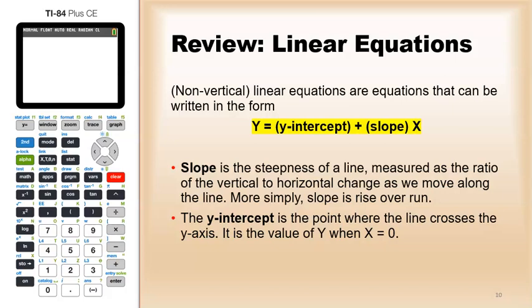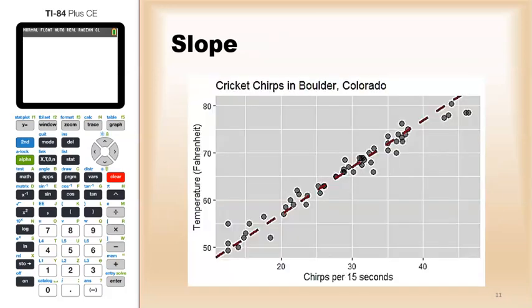So it's the value of y when the x value is zero. Looking at this, this is the graph of the cricket data and a line is going through the points.